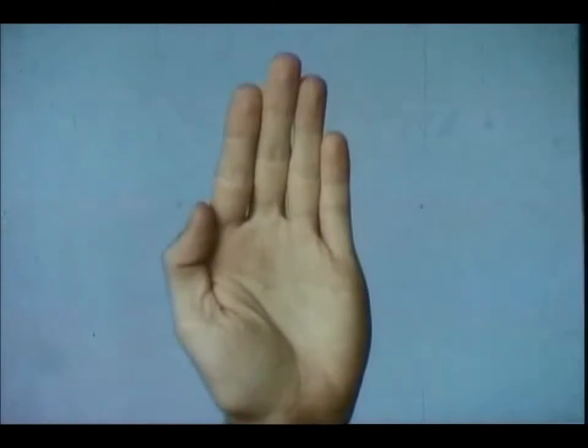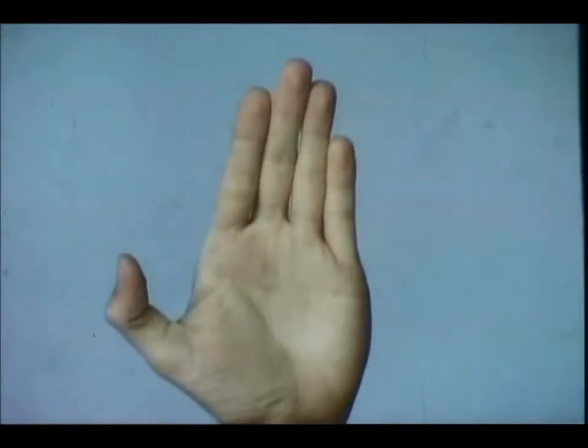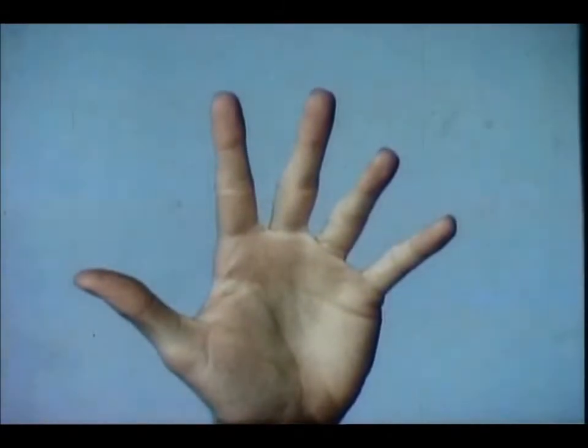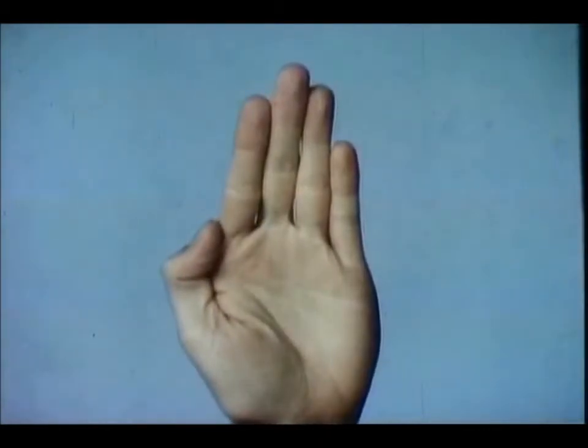There once was a hand like most hands. It had a thumb and four fingers - one, two, three, four - which all got along quite well together. And like most hands, it was quite limber and useful.